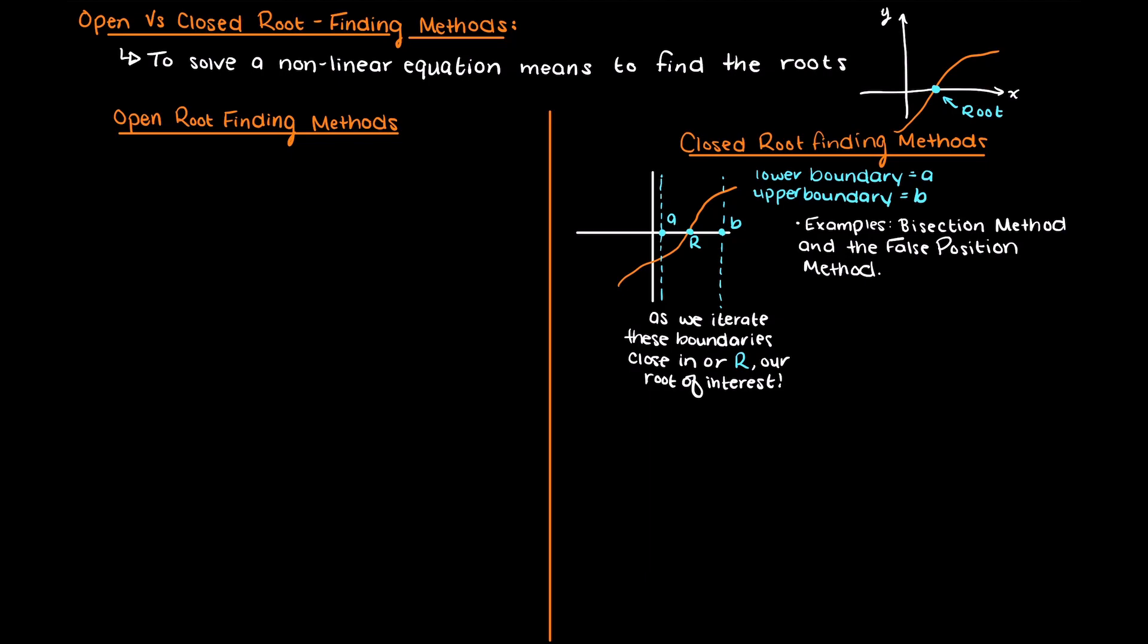The way in which we prove that there is a root present between our two intervals is by evaluating our function at both of our input boundaries, then we multiply those outputs together.